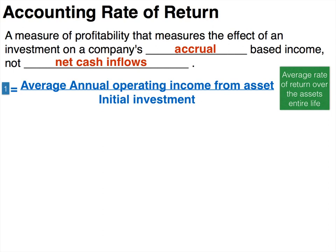The first form of the formula is to take the average annual operating income from the asset and divide that by the initial investment. What this calculates is the average rate of return over the asset's entire life. Notice we are dividing by the initial investment.